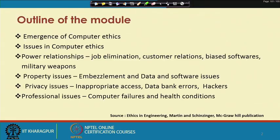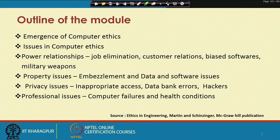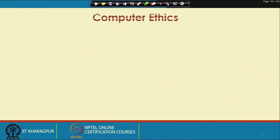The module will cover: emergence of computer ethics, issues in computer ethics, power relationships, job elimination, customer relations, biased software, military weapons, property issues like embezzlement, data and software issues, privacy issues like inappropriate access, data bank errors and hackers, and professional issues like computer failures and health conditions. We will first start with why ethics is relevant in the field of computers, or how the fields of computers and ethics get connected.